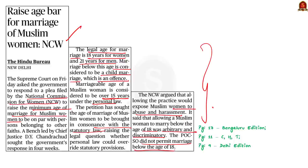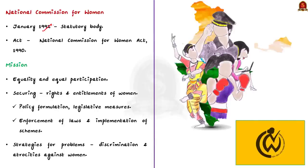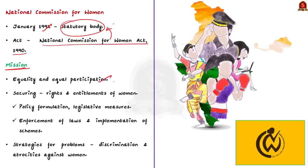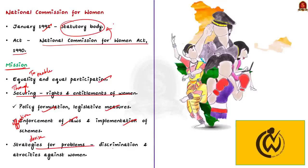In this context, let us learn about the National Commission for Women — its composition, objective, and important functions. The NCW was set up in January 1992 and was constituted under the National Commission for Women Act 1990, making it a statutory body. The main mission of NCW is to enable women to achieve equality and equal participation in all spheres of life by securing their rights and entitlements through suitable policy formulation, legislative measures, effective enforcement of laws, and implementation of schemes. NCW also aims to devise strategies to solve specific problems arising from discrimination and atrocities against women.